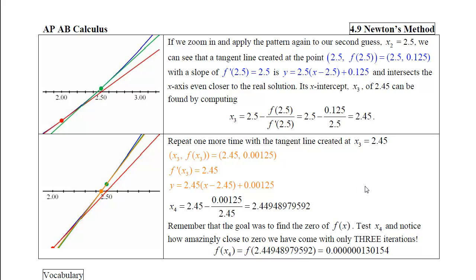If we repeat one more time with the tangent line created by an x-coordinate of 2.45, we'll need the y-coordinate that goes with it, we'll need the slope that goes with it, and then we can write the equation of the line and solve for its x-intercept, which will now be 2.44948979592.